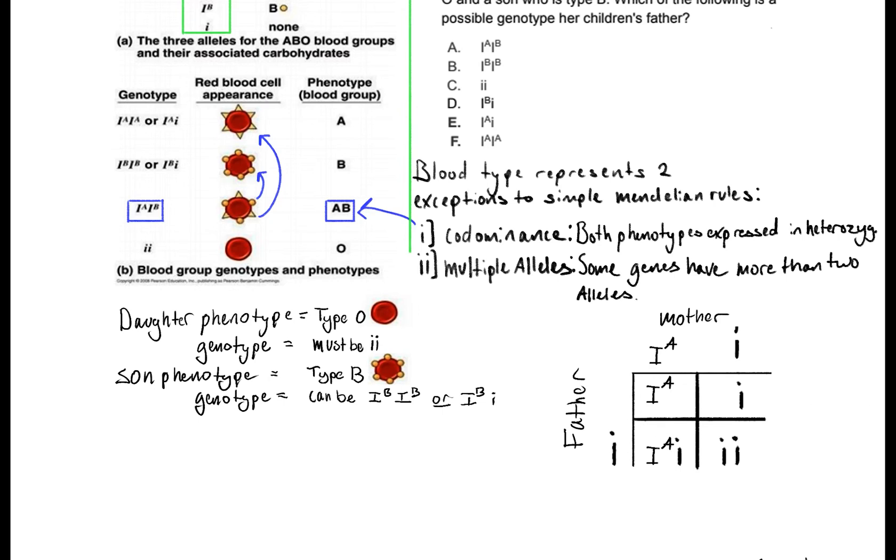What about our father? So for our father I like to look at the son here who is type B. We know that our father has to have a IB allele because there's no other combination that will distribute an IB allele in our Punnett cross. So I'm just going to put out IB here for our father.